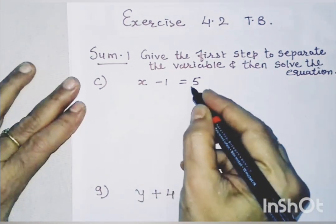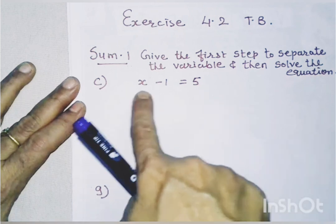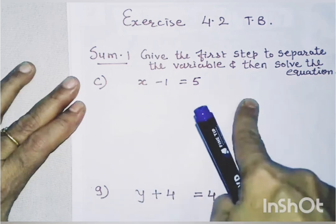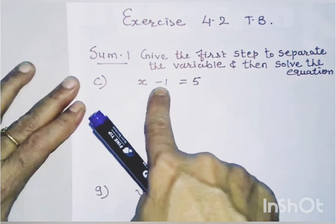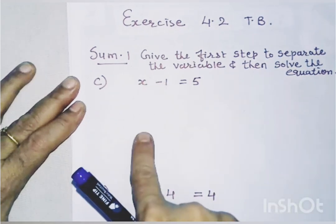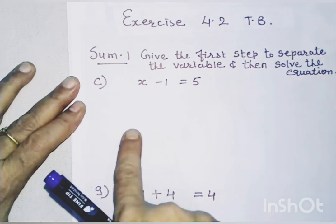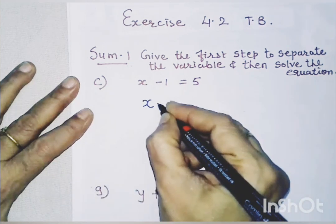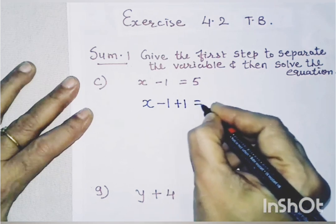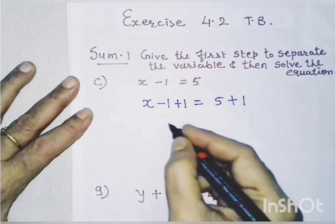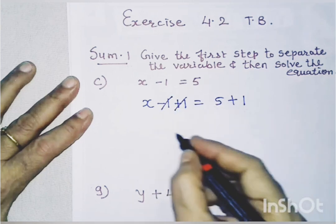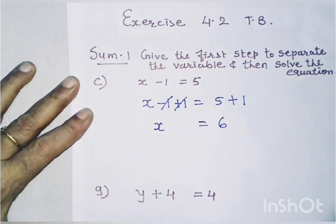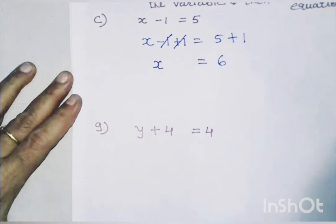The first equation is x minus 1 equals 5. We add plus 1 to both the sides so that minus 1 and plus 1 cancel. So x minus 1 plus 1 equals 5 plus 1, which gives x equals 6.